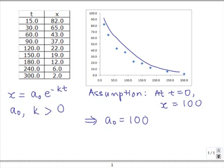So a0 equals 100, which then simplifies our model, or in this case the equation, to X as a function of t to 100 times e to the negative kt.